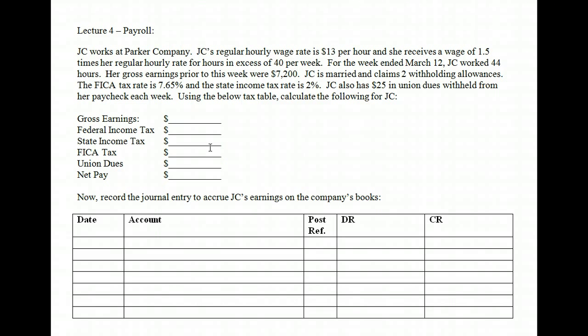The last item we'll look at under current liability is payroll. Payroll is a current liability in many ways. First, we owe the employees the wages they have earned. But in addition, we also have to collect and pay taxes on all the wages paid to employees. So there are different current liabilities embedded in this.